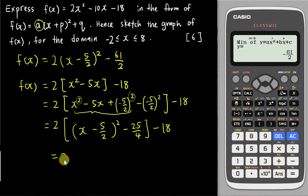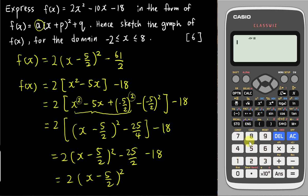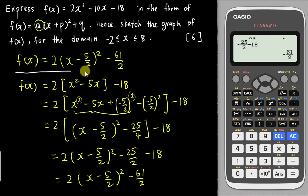Multiply 2 into both terms: leave 2 outside the bracket for the first part, and for negative 25/4 multiplied by 2 you get negative 25/2, then minus 18. Use the calculator in calculation mode — tap Menu then 1 — and compute negative 25/2 minus 18, which gives negative 61/2. This matches exactly the equation obtained earlier from the calculator.